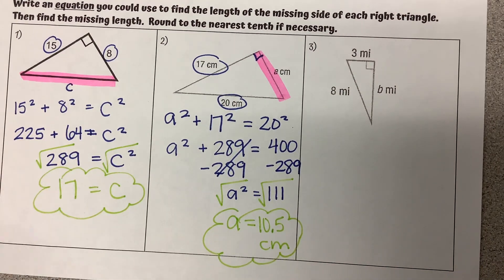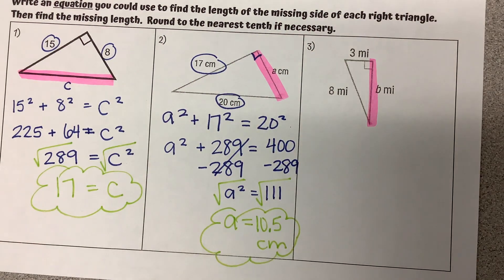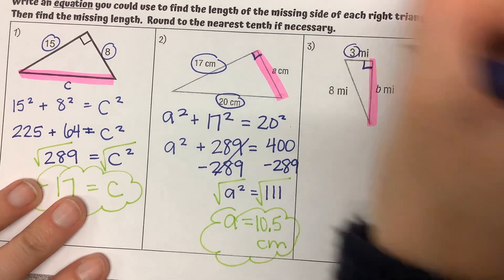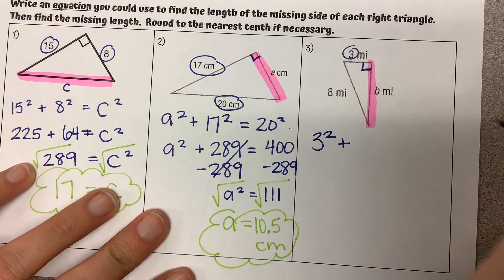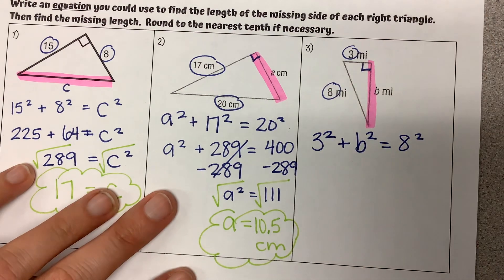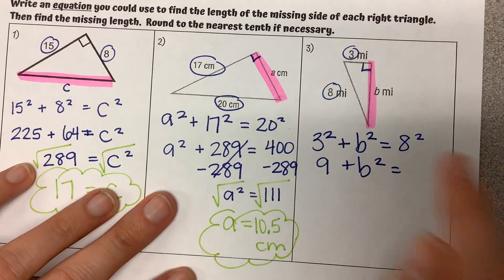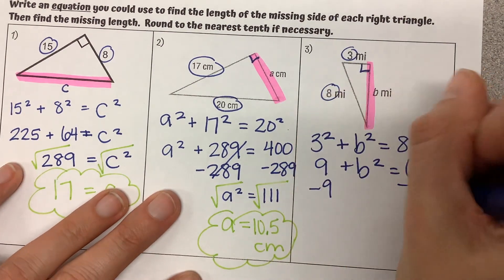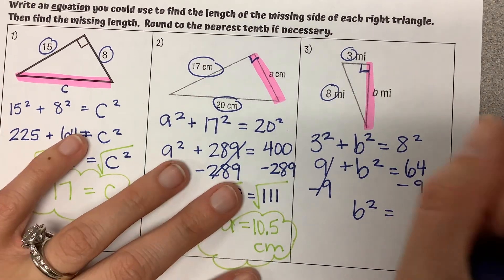Number three — our missing side length right here is B. It's also connected at the 90-degree angle, so we know it's one of the legs. Our other leg at the 90-degree symbol is three. So three is going to be our A value. I'm plugging in: three squared plus our unknown B squared is equal to our hypotenuse, eight squared. Three squared is nine plus B squared equals eight squared, which is 64. We need to get B alone, so we're going to get rid of the constant nine by subtracting from both sides. We get B squared is equal to 55.